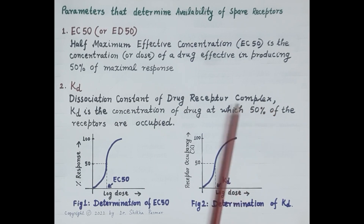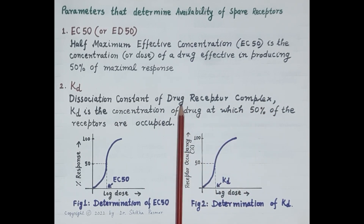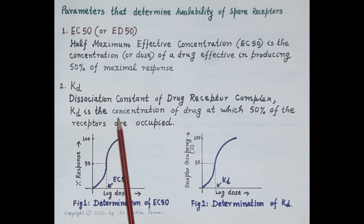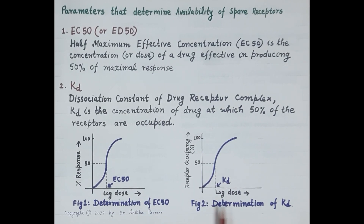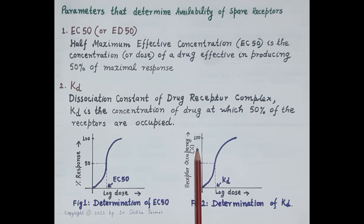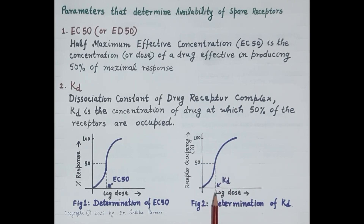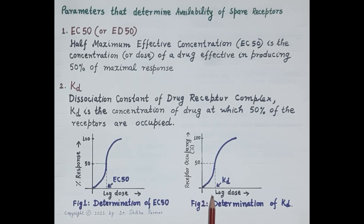Another important parameter is KD, the dissociation constant of the drug-receptor complex. Higher the number of receptors occupied by drug molecules, more will be the response. KD is the concentration of drug at which 50% of the receptors are occupied. In Figure 2, the x-axis shows log dose of drug and the y-axis shows percentage of receptors occupied. From the curve, KD is the dose or concentration that occupies 50% of the receptors.